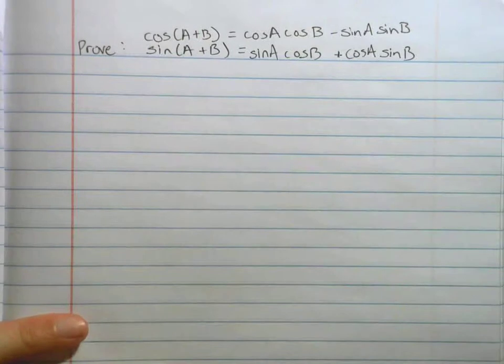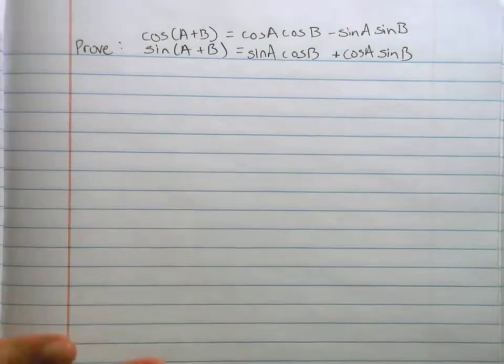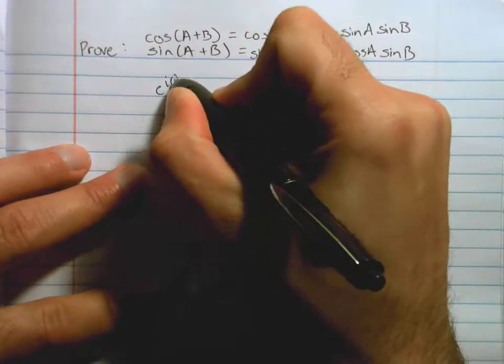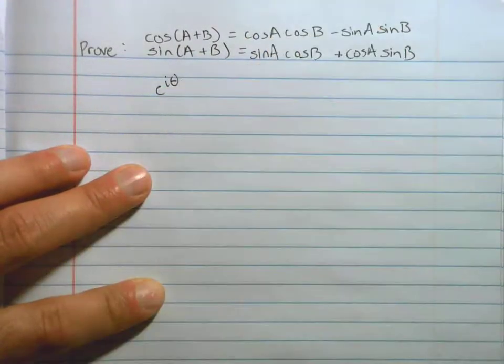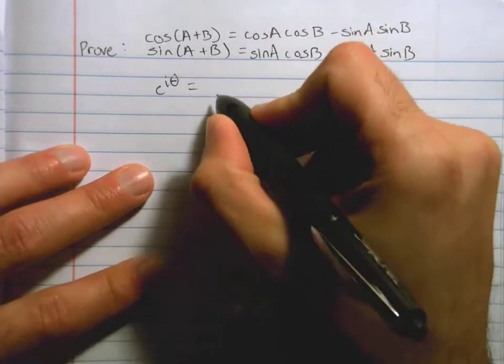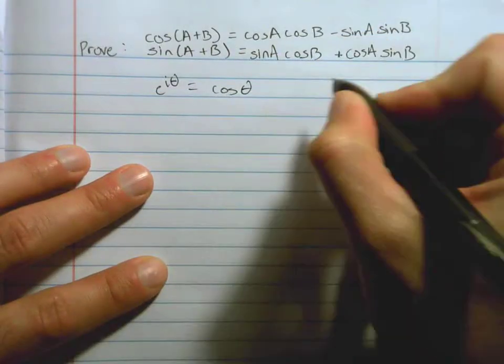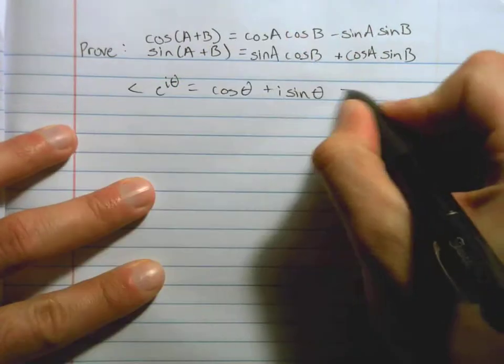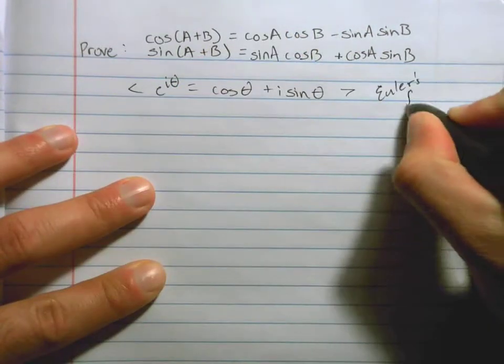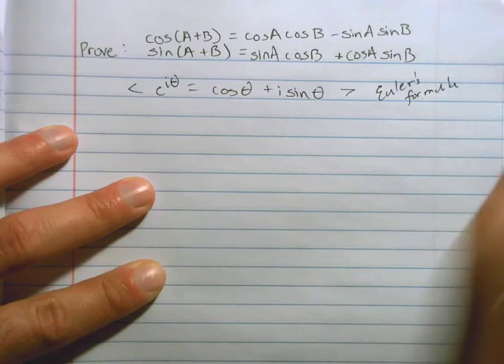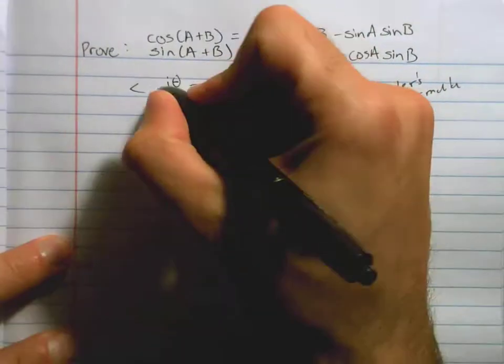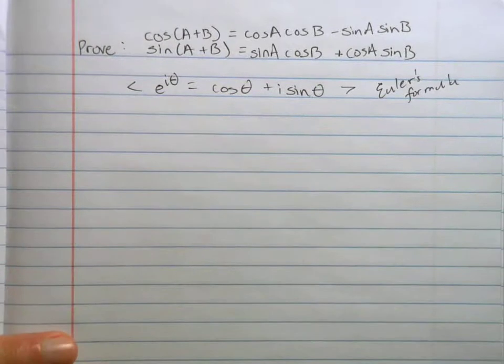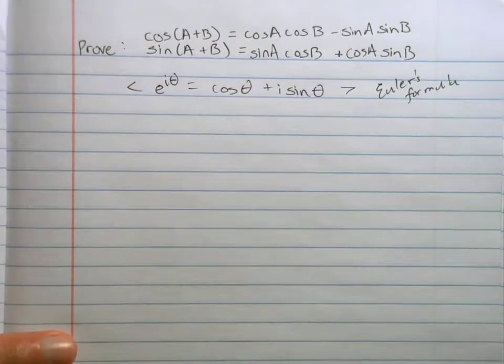Identities for cosine and sine. How do I do it? By this formula here, that e to the i theta equals cosine theta plus i sine theta. And again, that's an e. So that's Euler's formula. We're going to use that in a couple of regards. First, we're going to start with this formula and say, look,